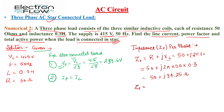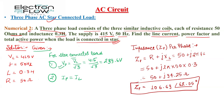Converting from rectangular to polar form, we get Zp = 106.69 at an angle of 62.05 degrees. This is how we have calculated the per-phase impedance.